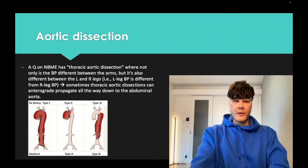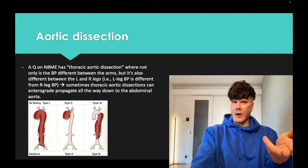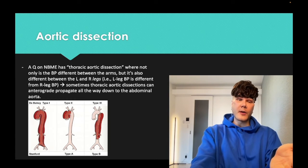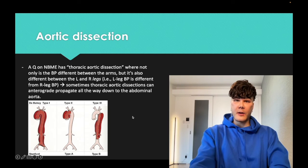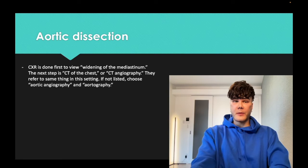There's an obscure NBME vignette where blood pressure is different between the legs — the answer is thoracic aortic dissection. This is possible because a DeBakey type 1 dissection can anterograde propagate all the way down to the aortic bifurcation and common iliacs, causing differential blood pressure between the legs.